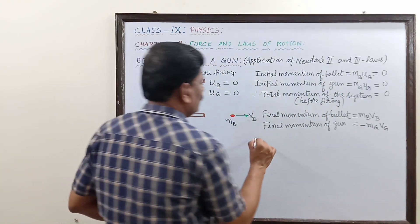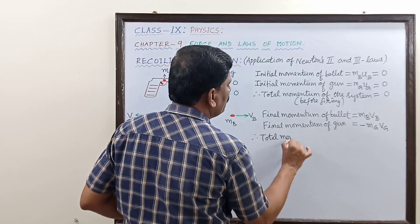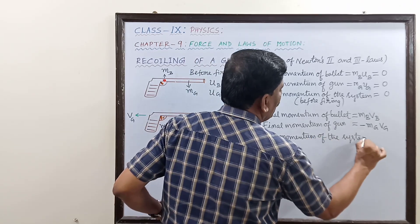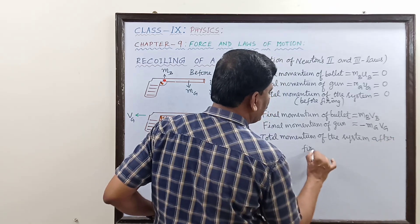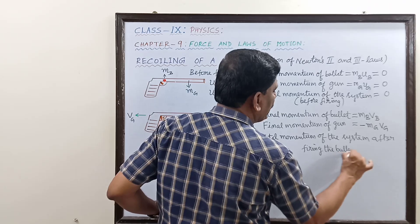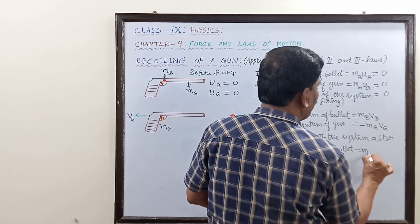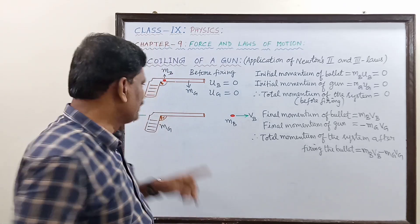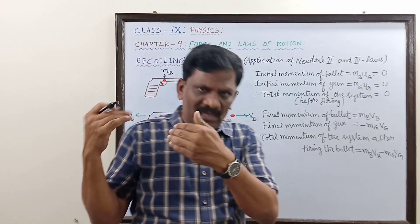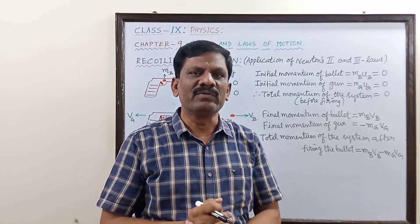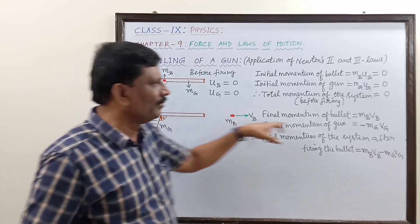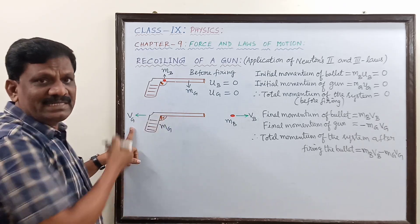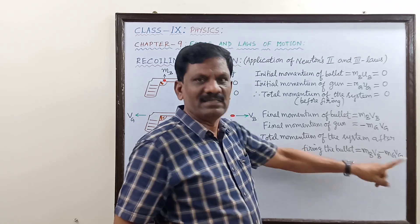So the total momentum of the system after firing equals M_B·V_B plus (−M_G·V_G). The minus sign is because when momentum or velocity is in the negative x direction, it is negative. The bullet's momentum is along the positive x direction, so M_B·V_B is positive, but M_G·V_G is in the opposite direction — the negative x axis — so it carries a minus sign.